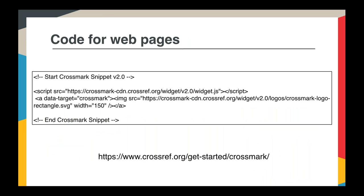This is the piece of code - it's very simple and you can get it from our website. You simply embed this into your web pages and that, in combination with the DC Identifier DOI, will call the Crossmark box and populate it with metadata from the Crossref database.